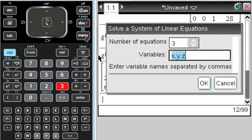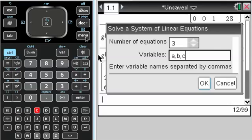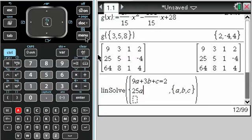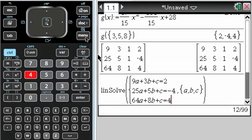I have the three equations. X, Y, Z doesn't really matter, I'm going to change it to A, B, and C. And then it just asks you, so I'm going to type it in. So it's 9A plus 3B plus C equals 2. 25A plus 5B plus C equals negative 4. And 64A plus 8B plus C equals 4. Press Enter. And it gives you the coefficients, but again, not a lot of math being learned there.